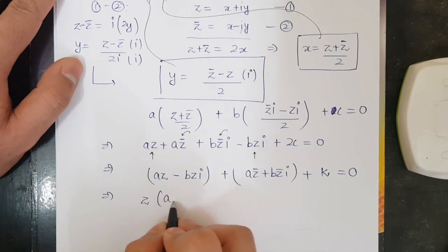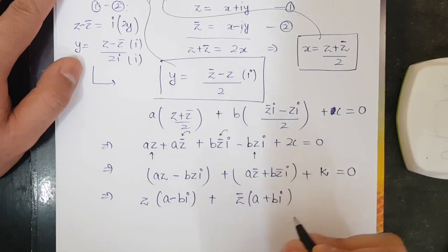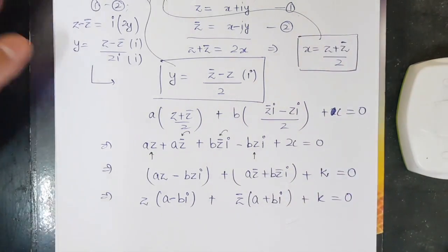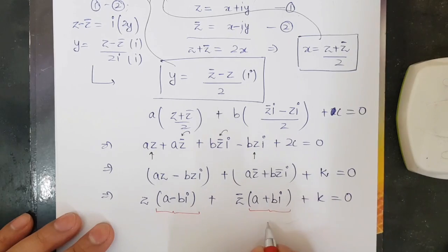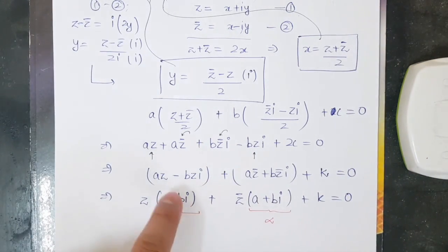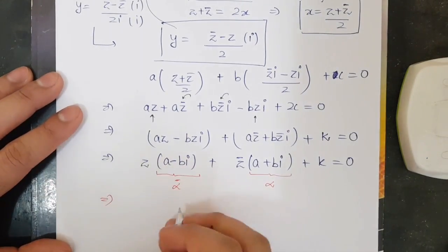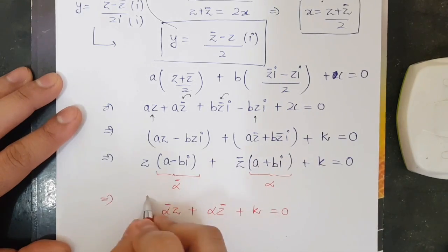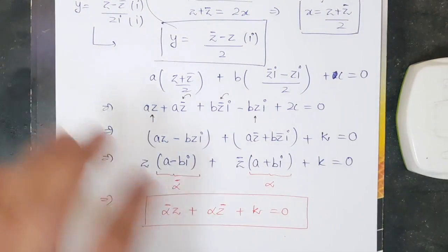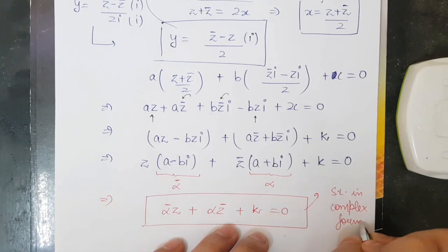Taking z as common, we get z·(a − b·iota) + z̄·(a + b·iota) + k = 0, where k = 2c is a real constant. If we let alpha = (a − b·iota), then its conjugate ᾱ = (a + b·iota), giving us the equation: alpha·z̄ + ᾱ·z + k = 0. This is the equation of a straight line in the complex plane.